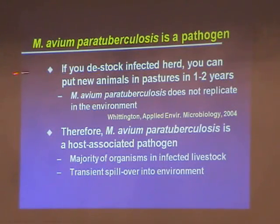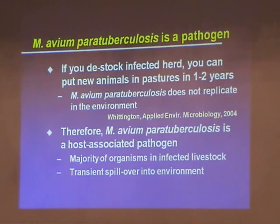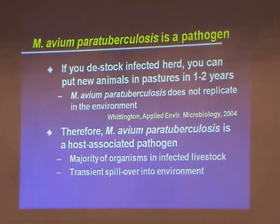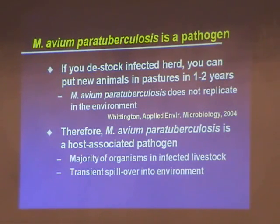If you take the infected herd and, unfortunately, you remove them all, you can put new animals in the pastures in one to two years. The organism does not replicate in the environment, so you've got a clean pasture two years from now. That's different than anthrax — in the old days, when a farmer's field had anthrax, you put sheep there, you'd get anthrax again. So this is not what I call an environmental organism. I consider it a host-associated pathogen where the vast majority of the bacteria are causing disease, and transiently it spills out of the sick animals into the environment.